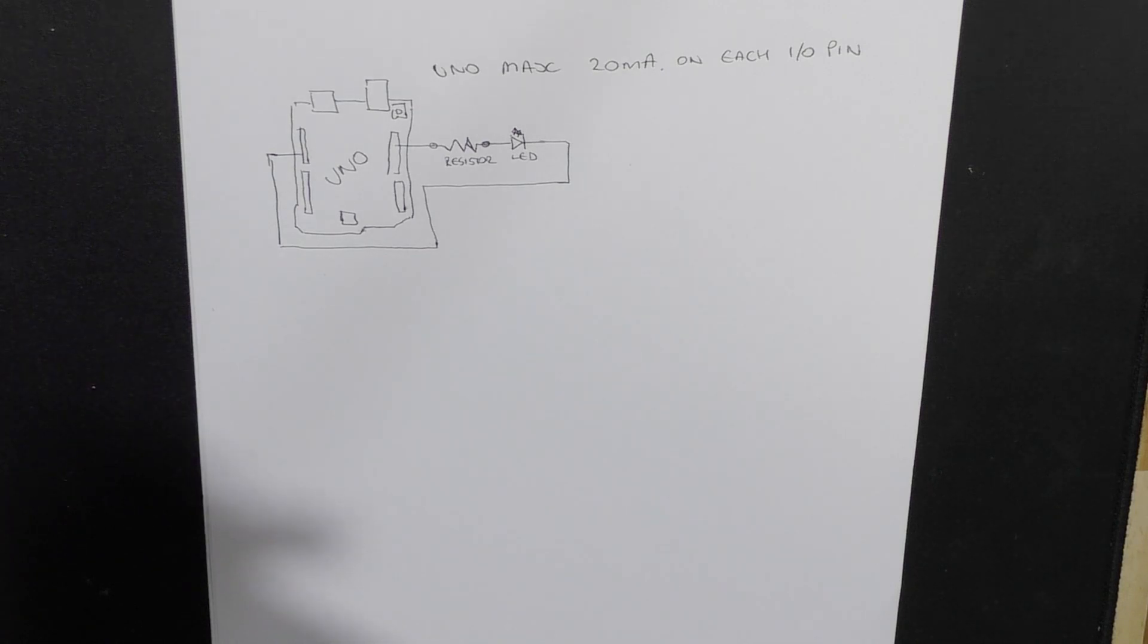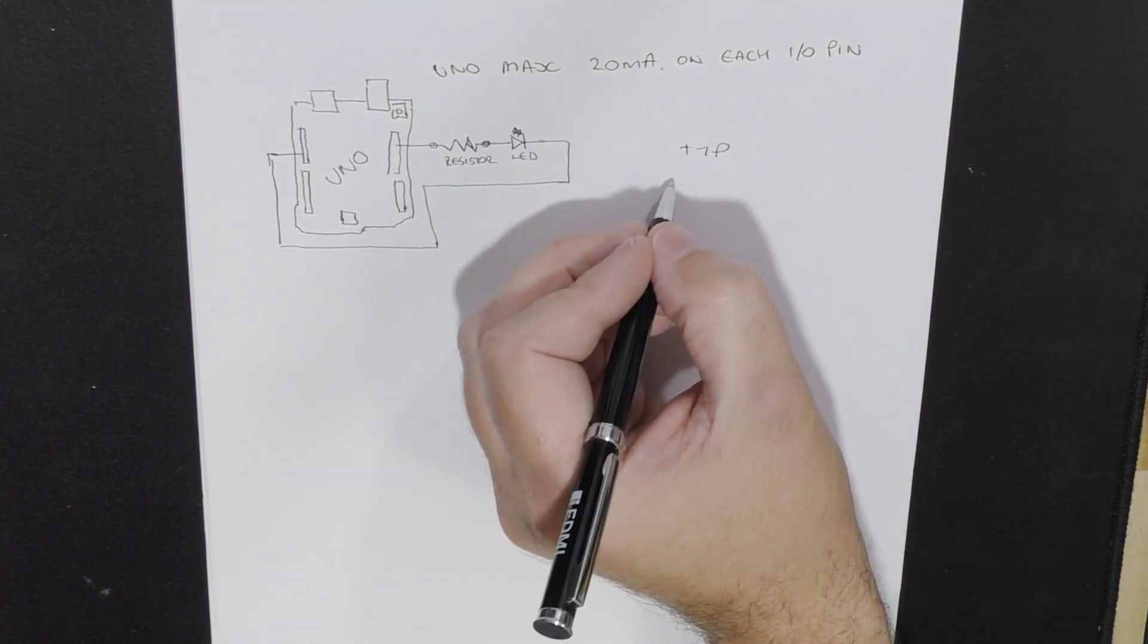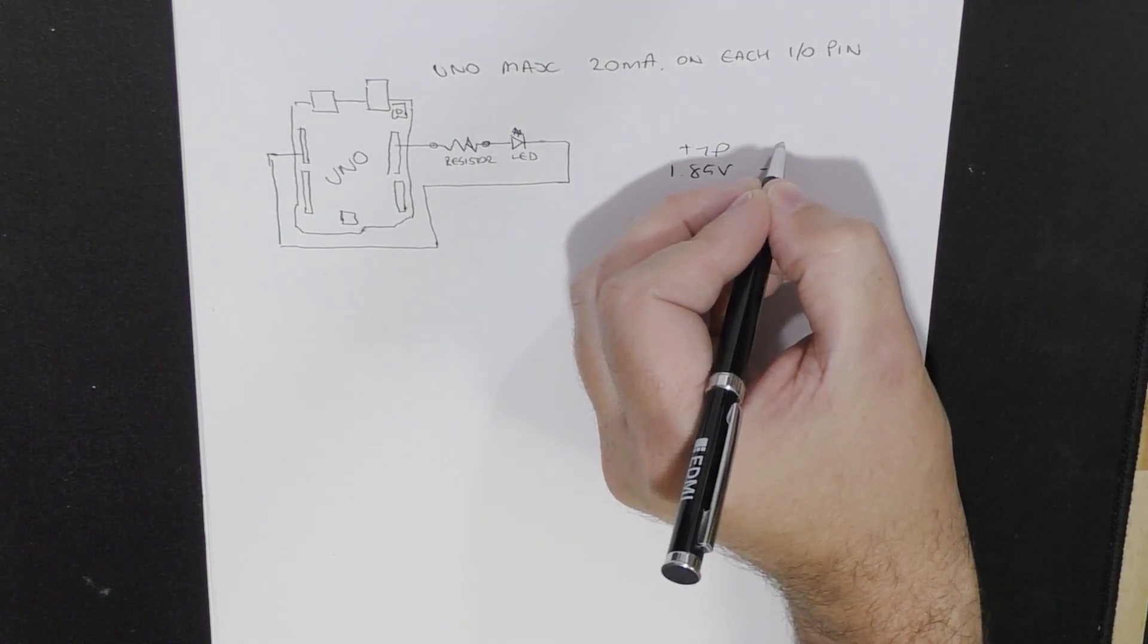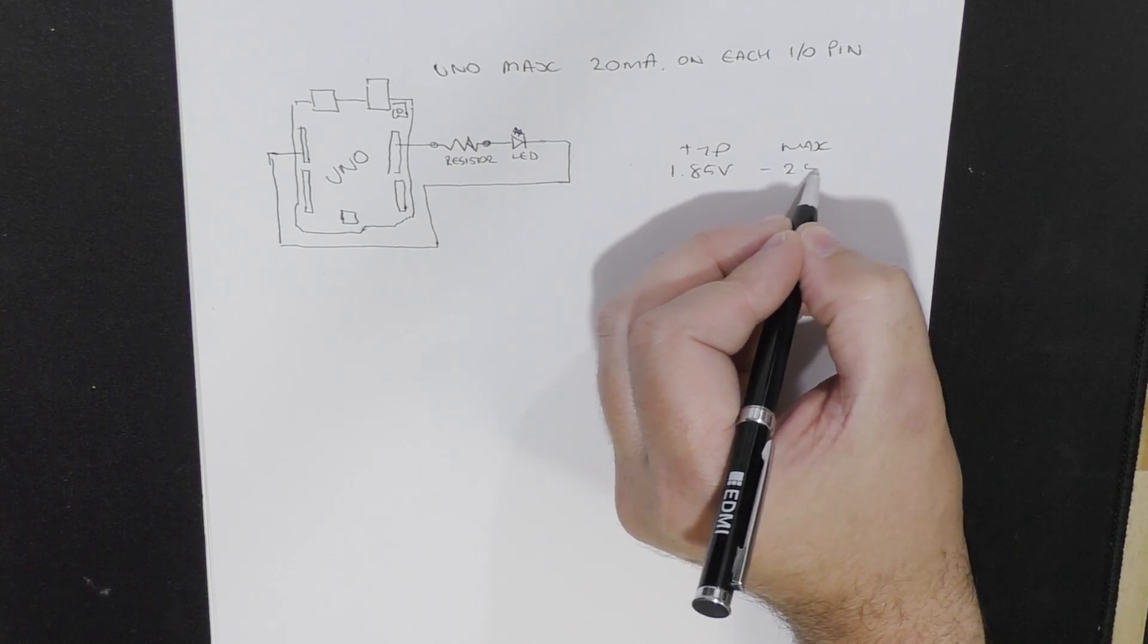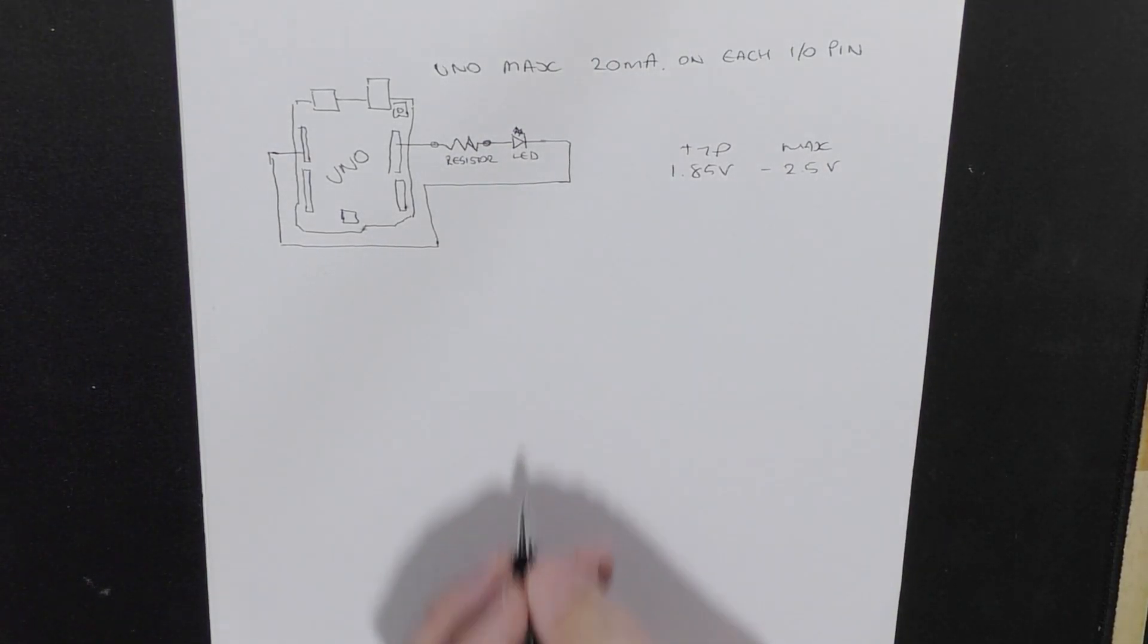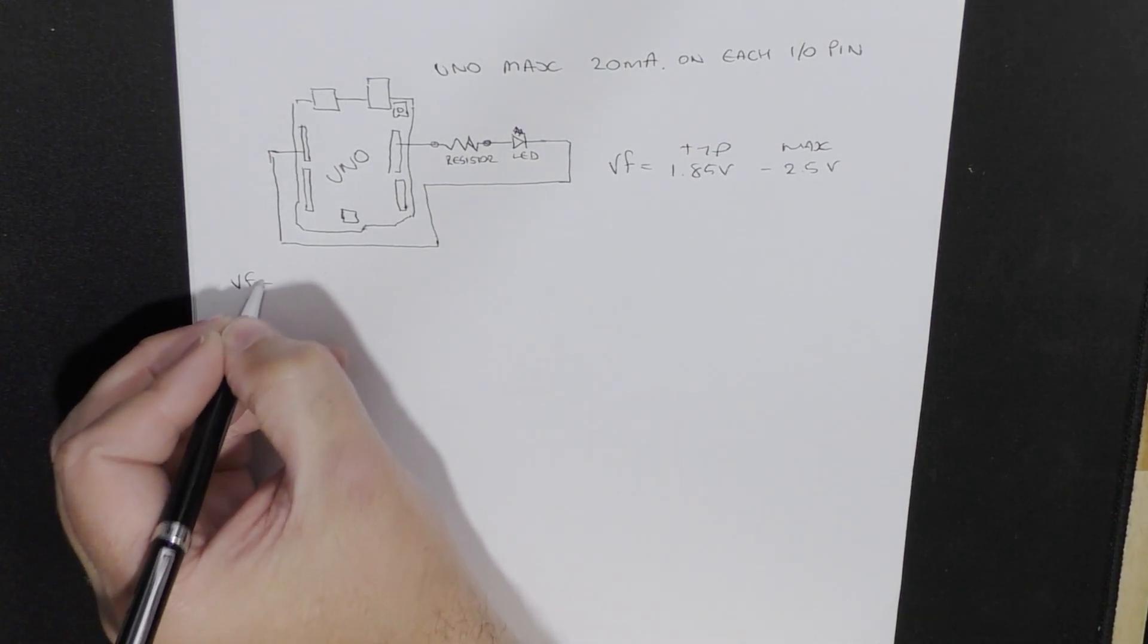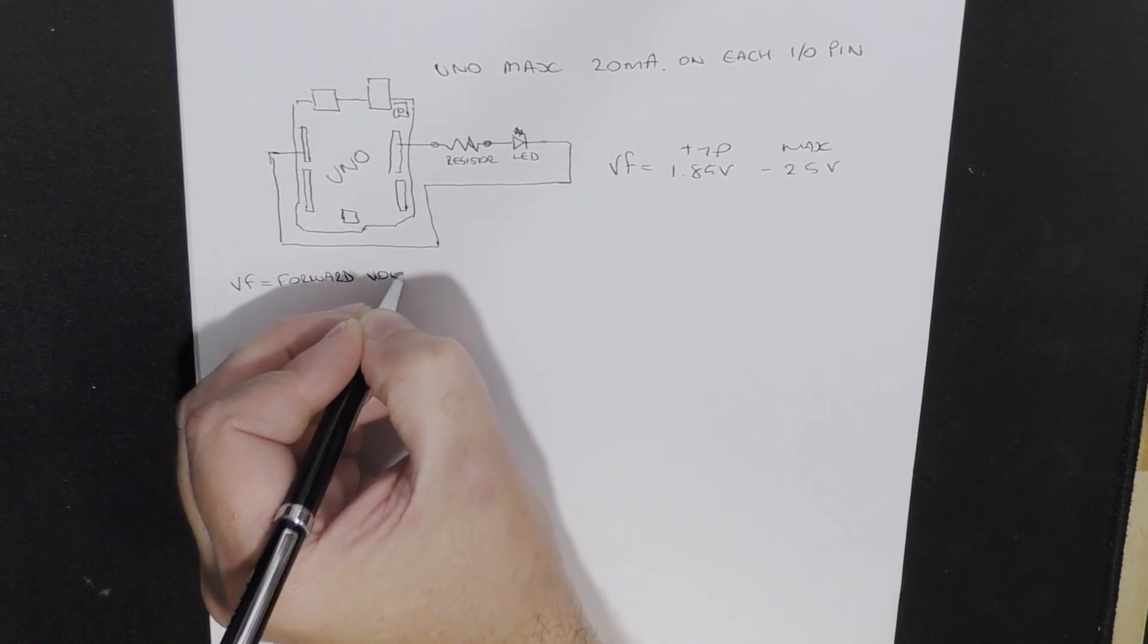To find out those, we need to know the forward voltage from the spec sheet of the LED. Now that would typically be 1.85 volts to a maximum of 2.5 volts VF. So VF equals forward voltage.